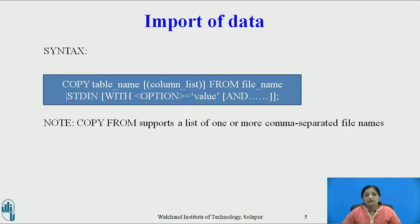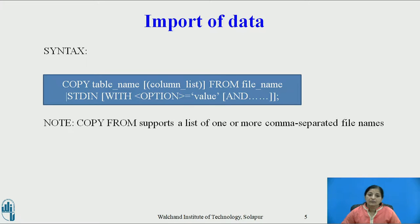The syntax of the COPY FROM command is: COPY table_name followed by a column list specifying which column values you want to import, FROM file_name — the file from which you want to import the data. This file name can be more than one. Or instead of a file name, you can import data from the standard input device (keyboard) using stdin. This is followed by options set to different values; there are 7 to 8 options available. Note: COPY FROM supports a list of one or more comma-separated file names, meaning you can copy from more than one file into the table.